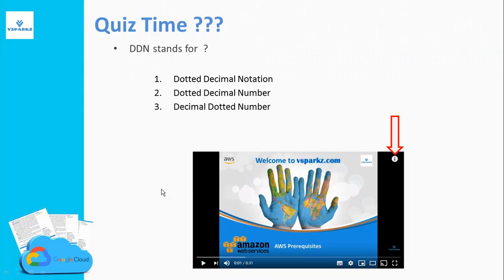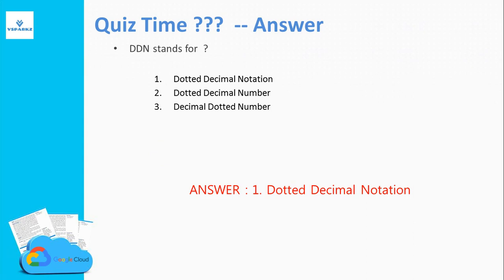Now it's quiz time. The question is: DDN stands for what? The options are: dotted decimal notation, dotted decimal number, or decimal dotted number. The answer is dotted decimal notation — DDN stands for dotted decimal notation.